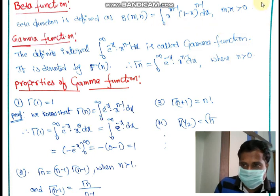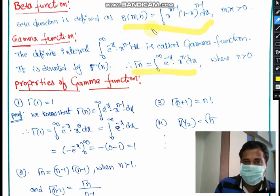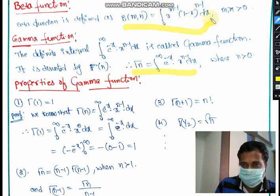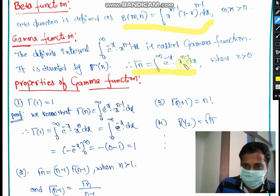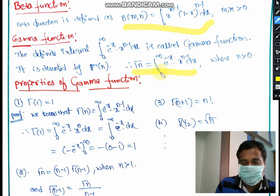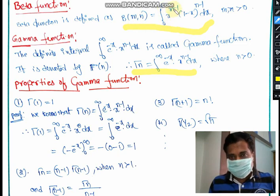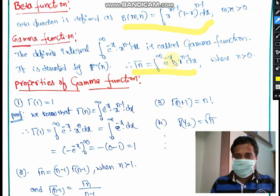So these are the two basic definitions. β(m, n) = ∫₀¹ x^(m−1)(1−x)^(n−1) dx and Γ(n) = ∫₀^∞ e^(−x) · x^(n−1) dx. Students must remember: if it is the beta function, the limits are 0 to 1; if it is the gamma function, the limits are 0 to infinity. Don't confuse them.